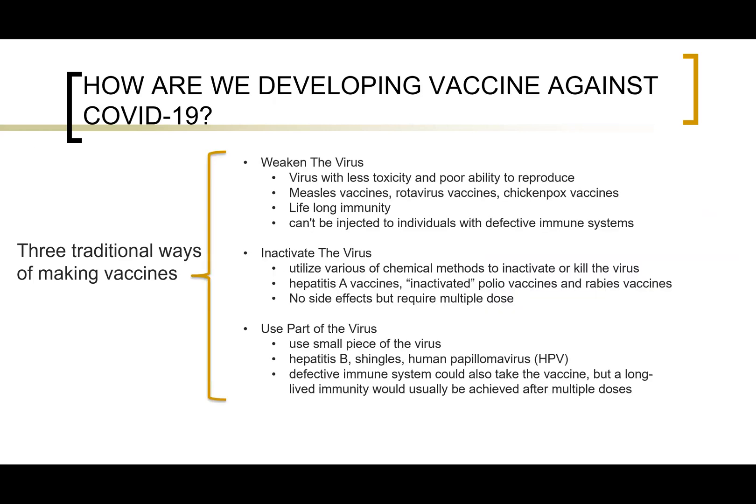Since there are no highly effective treatments, vaccines become the only way to completely defeat the virus. Before discussing COVID-19 vaccine development, I want to briefly introduce the three traditional ways of producing vaccines. The first is the weakened virus method. Viruses are weakened so they have less toxicity and a poor ability to reproduce after injection into the human body. Weakened viruses used in vaccines usually have less than one-twentieth the reproduction ability of their normal state, so they do not cause disease. However, they do have enough replication power to induce memory B cells that fight against infection.